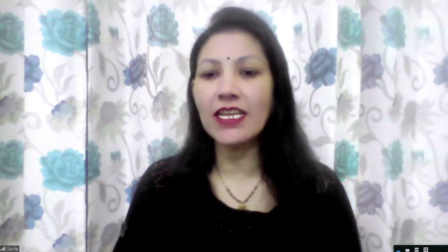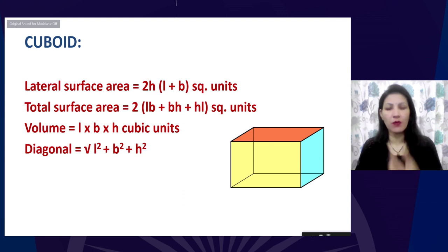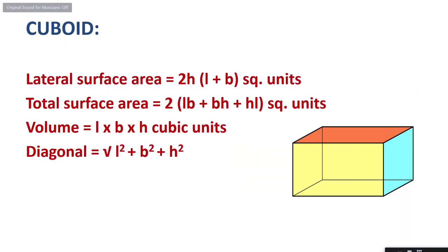In the previous session, the first shape we discussed was the cuboid. The room in which we are sitting is most often the shape of a cuboid. We discussed the lateral surface area of a cuboid — that is simply the area of the four walls, leaving the top and bottom. The lateral surface area is 2h(l + b).